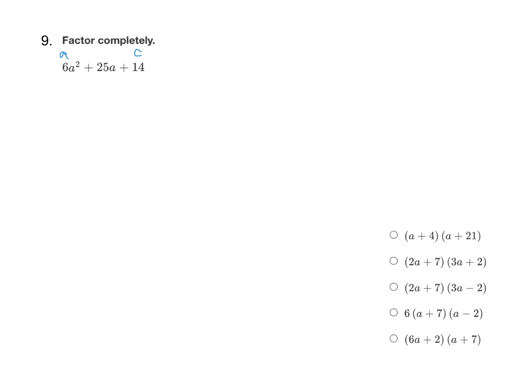So we need to use the slide and divide method where we begin by taking the a, sliding it to the end, and multiplying it by c. 6 times 14 is 84. So we can rewrite our new quadratic as a squared plus 25a plus 84.